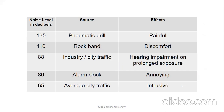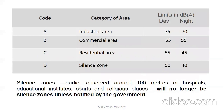Noise levels and effects: 135 dB — pneumatic drill (very painful); 110 dB — rock band (very uncomfortable); 88 dB — traffic (hearing impairment on prolonged exposure); 80 dB — alarm clock (very annoying); 65 dB — city average traffic (intrusive). Note that silent zones earlier observed around 10 meters of hospitals or educational institutions will no longer be silent zones unless notified by the government.